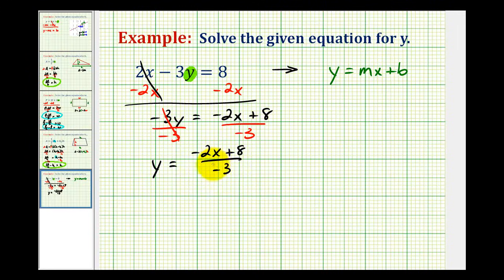So let's go ahead and rewrite this in a different form. Because we're dividing by a monomial, we can break this up into two fractions. We'd have negative two X divided by negative three plus eight divided by negative three.